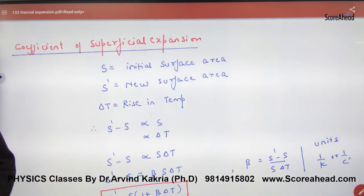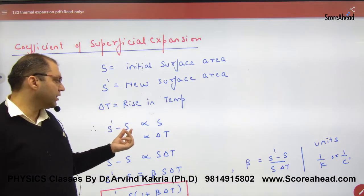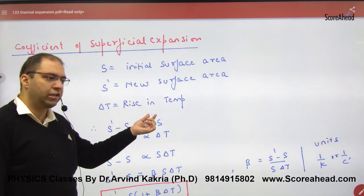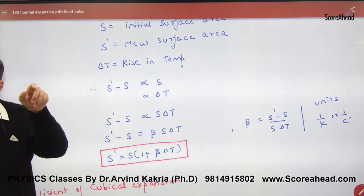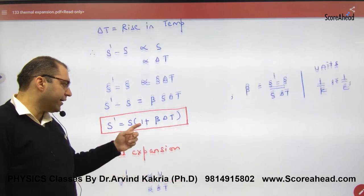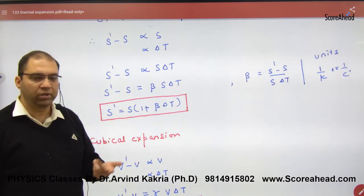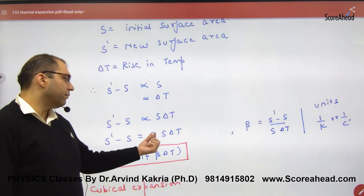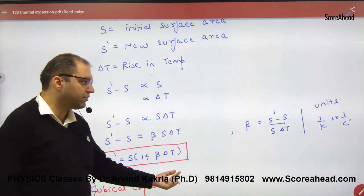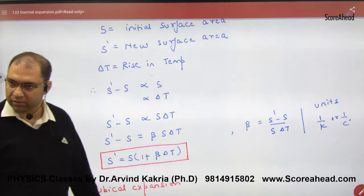Similarly, for things that expand area-wise, if S is the original surface area and S' is the new surface area, the change in surface area depends on the original surface area and rising temperature. Combining these gives a constant beta. So S' = S(1 + β·ΔT), where beta is the coefficient of superficial expansion. The formula for beta is β = (S' - S)/(S·ΔT). Since numerator and denominator both have meter squared, the units are 1/Kelvin or 1/degree Celsius.